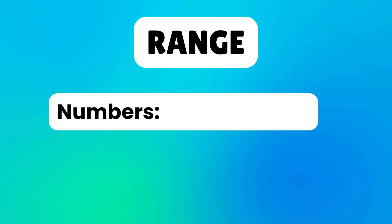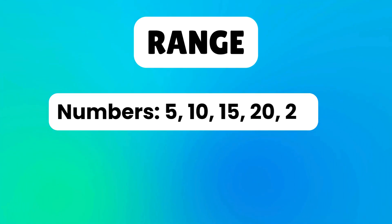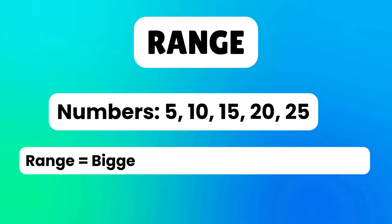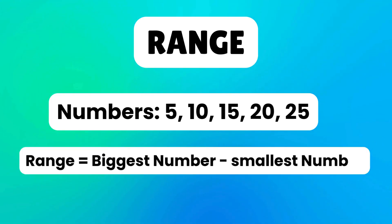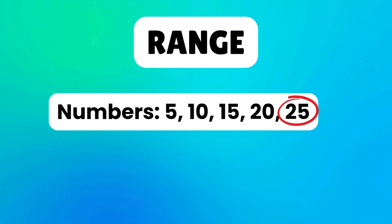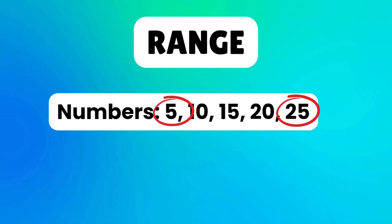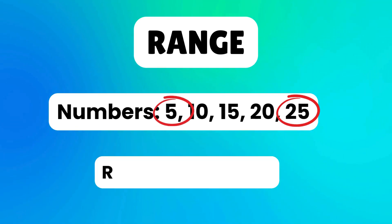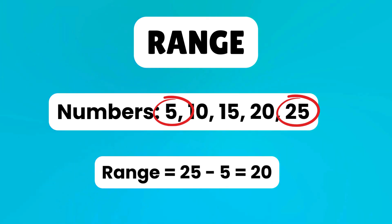Let's do an example together. Numbers are 5, 10, 15, 20, 25. We find the range by subtracting the smallest number from the biggest number. The biggest number is 25 and the smallest number is 5. Range equals 25 minus 5 equals 20.